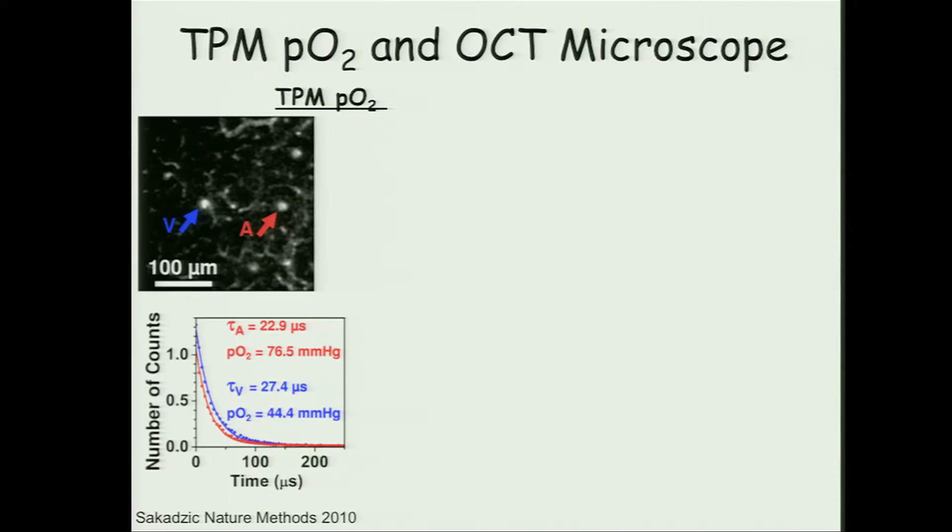So we've been developing a multimodal microscope that can really allow us to look at these microscopic details of oxygen and blood flow within the microvascular capillary network. We're doing two-photon microscopy of a novel phosphorescent agent that is quenched by oxygen, and this way we can get maps of the partial pressure of oxygen.